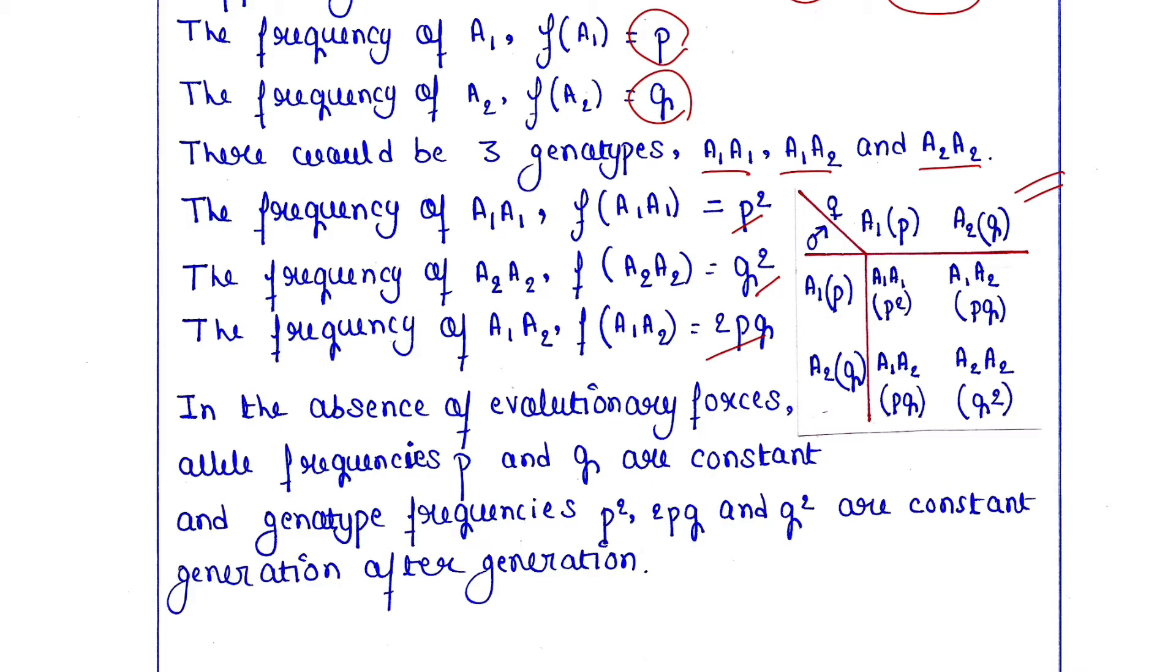Each of them will produce two alleles, A₁ and A₂.